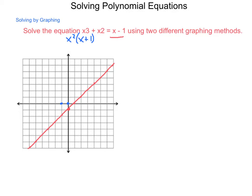It's a cubic with a positive lead coefficient, so it ends high on the right and starts low on the left. Substituting in x equals 1 gives 2, x equals 2 gives 7, and x equals negative 2 gives negative 4. Graphing this, we have a crossing somewhere around negative 1.8. Graphing calculators are very helpful for this, and we'll take a look at that in just a second.